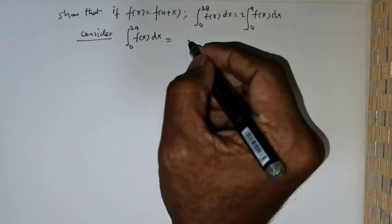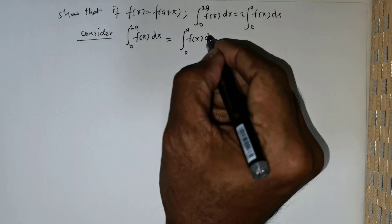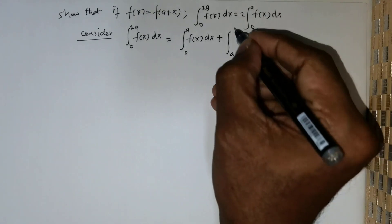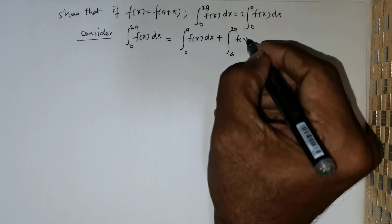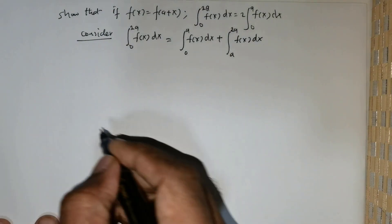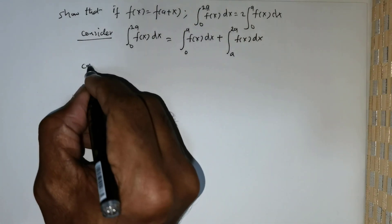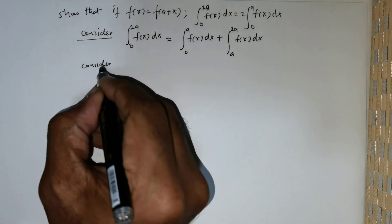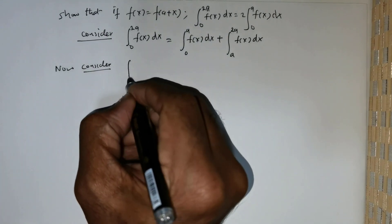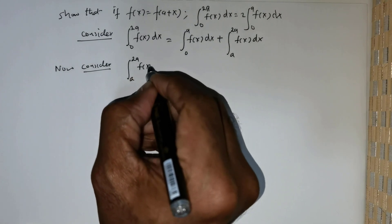This can be rewritten as the integral from 0 to a of f of x dx, plus the integral from a to 2a of f of x dx. Now I will consider the integral from a to 2a of f of x dx.